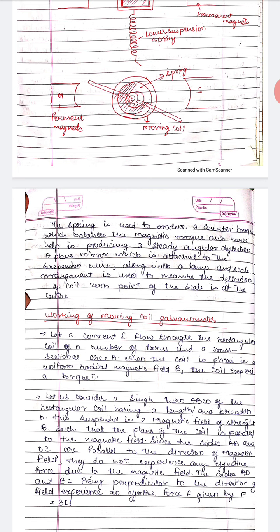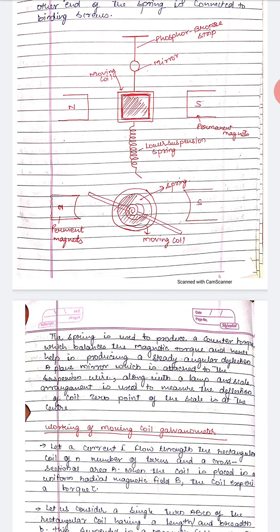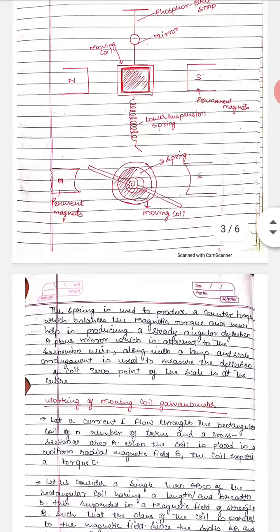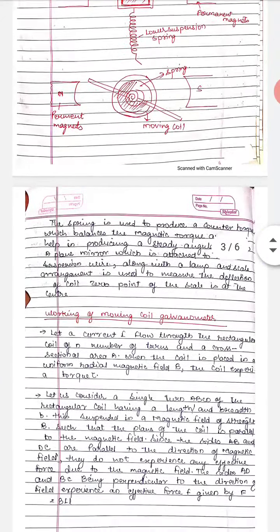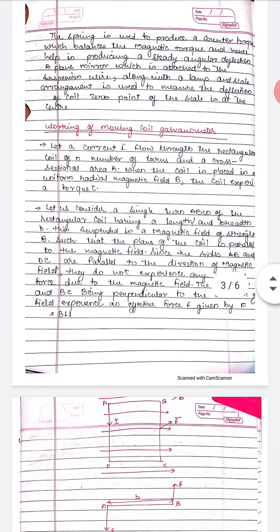The counter torque produced by the spring balances the magnetic torque and hence helps in producing a steady angular deflection. A plane mirror attached to the suspension wire, along with a lamp and scale arrangement, is used to measure the deflection of the coil from the zero point of the scale at the center.